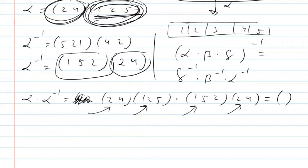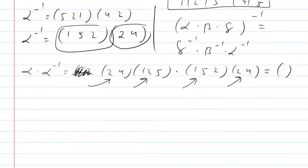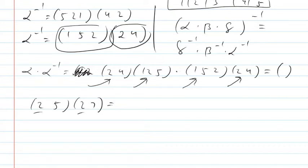Before we apply this to a puzzle, you might remember from a previous lecture that if you take two 2-cycles with the same first number — like (2, 5) and (2, 7) — and do the composition, you get the 3-cycle (2, 5, 7).